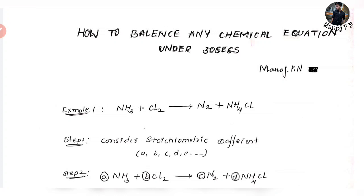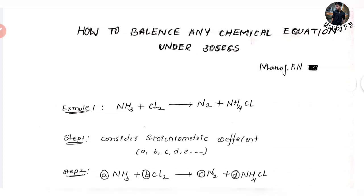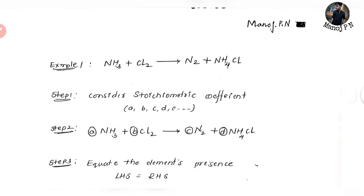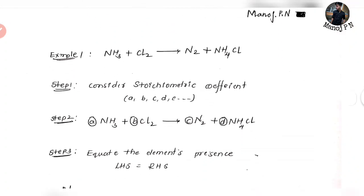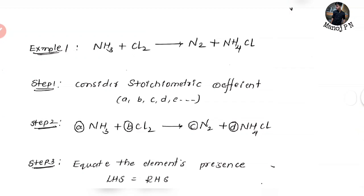See, practice makes man perfect. How do you practice it? Anyway, if you want to form and balance a chemical equation, you will definitely get results under 30 seconds. So let's get started. First, what we have to do is to observe the equation.